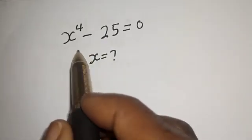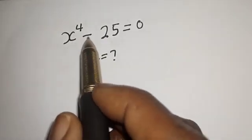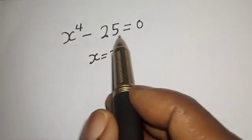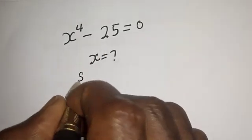Hello, welcome to Math Focus. How to solve s to the power 4 minus 25 is equal to zero. Solution: